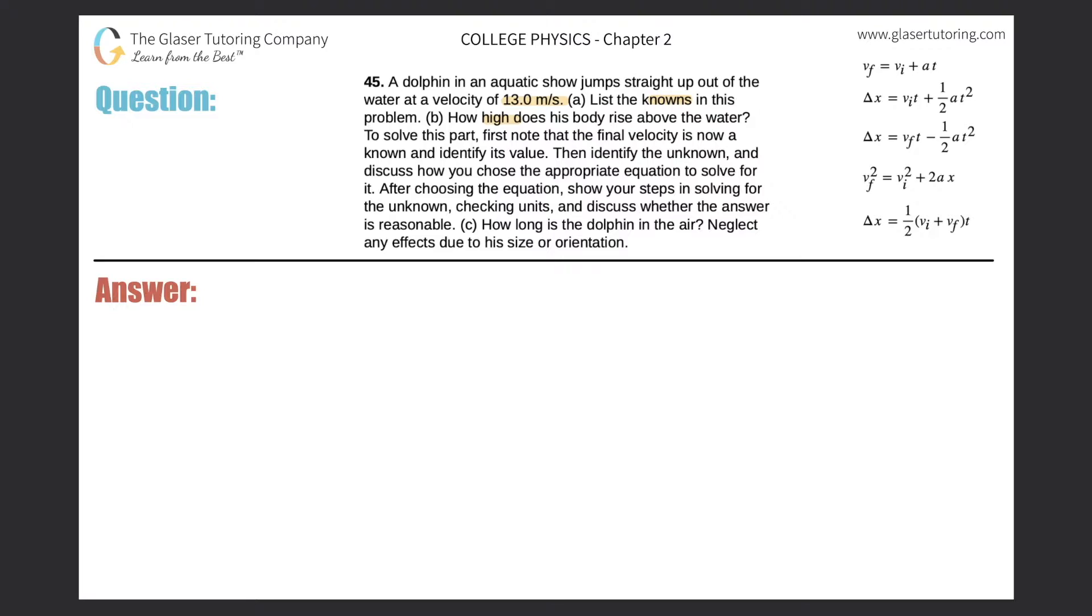Alright, so let's take a look at a dolphin here. Here's the dolphin—looks more like a submarine. So the dolphin is going to jump out of the water, right? And it says that essentially the initial velocity of this dolphin jumping out of the water is going to be 13.0 meters per second.